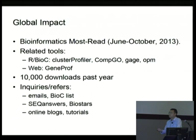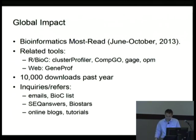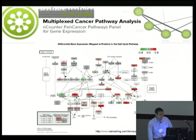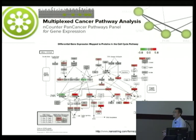Many tools have been developed depending on PATH-View, and we received about 10,000 downloads in the past year. We got hundreds of inquiries referred through emails, major bioinformatics forums, and online blog tutorials. PATH-View has been adopted by multiple courses offered through major research institutions. PATH-View also makes its way to industrial products and services — for example, a company called Nanostring uses PATH-View in their latest product called the Cancer Pathway Panel.